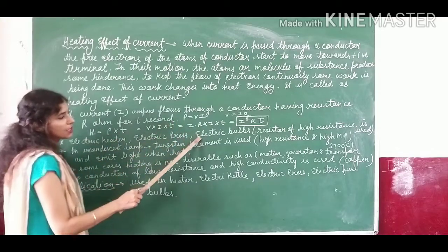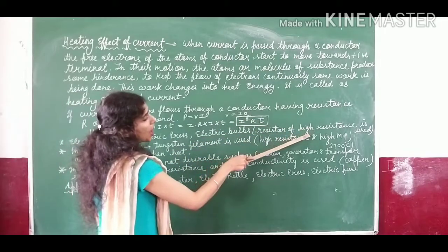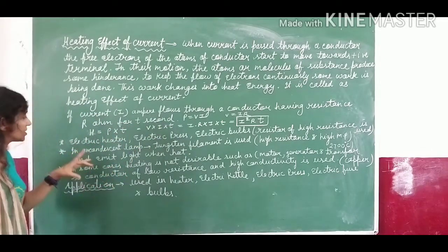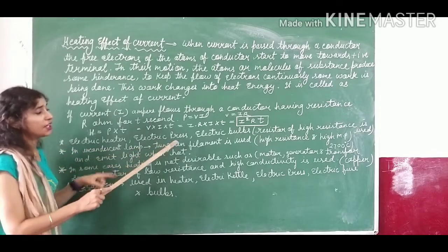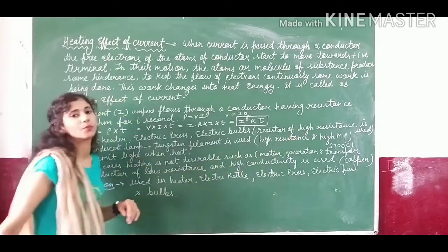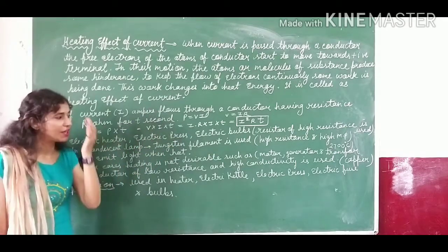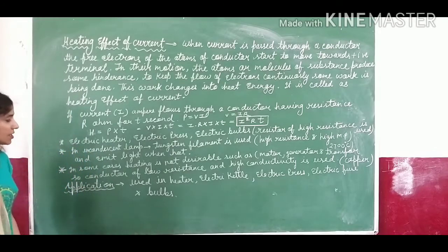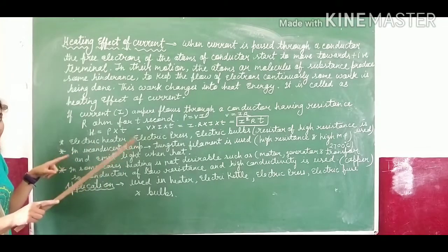Electric heater, electric press, and electric bulb all work on the heating effect of electric current. In these devices, a high resistance element is used — whatever resistor is used must have high resistance to create the heating effect. In an incandescent lamp, a tungsten filament is used because tungsten has high resistance and a very high melting point. It keeps glowing without melting because its melting point is very high — around 2700 degrees Celsius — which is why tungsten filament is used in bulbs.